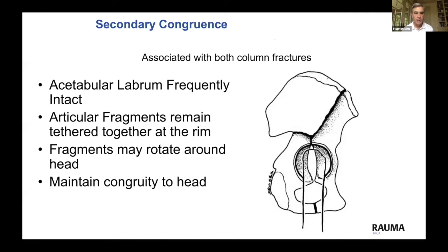The concept of secondary congruency applies to both column fractures: the labrum and possibly the capsule remain intact, and the fracture fragments may just rotate around the femoral head. As long as the acetabulum is not too far medially displaced and it's congruent on all three views, there is some possibility that treating these non-operatively could yield a reasonably good result.